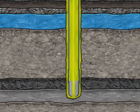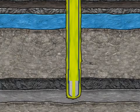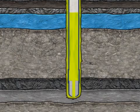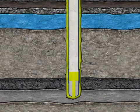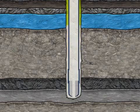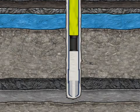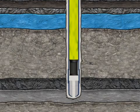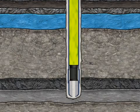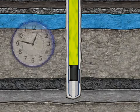In order to secure the laid casing string to the formation, cement is pumped through the casing shoe at the bottom of the well, letting the cement flow between the casing and the formation. To allow further operations in the well, the cement requires sufficient curing time.